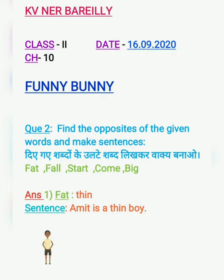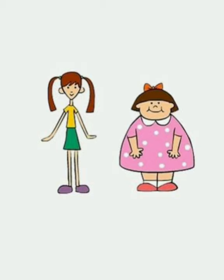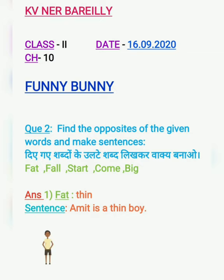For example, the first word is fat, یعنی کی موٹا. The opposite of this word — इसका विलोम शब्द — is thin, یعنی کی پتला. Sentence: Amit is a thin boy. Amit ایک پتلا لڑکا ہے.